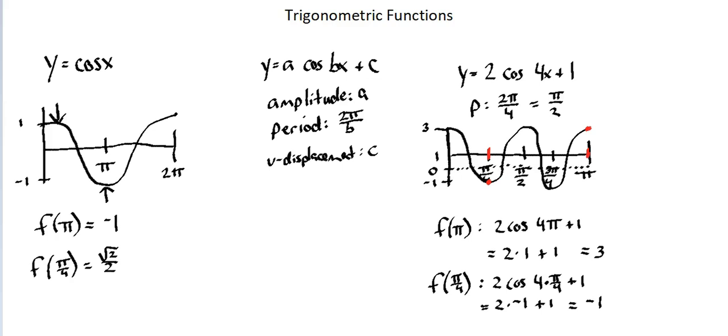In this lesson, we've seen the cosine function, the basic function y equals cosine x, and the general form y equals a cosine bx plus c. In our next lesson, we're going to look at the tangent function.